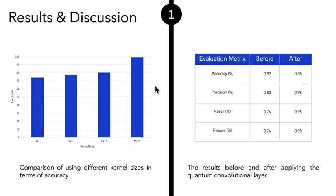For the second experiment, on the right side of the screen, it's the result before and after applying the convolutional layer. The accuracy before applying the convolutional layer, or applying our proposed model, is 0.92. After applying the convolutional layer, it's 0.98, which improved a lot.